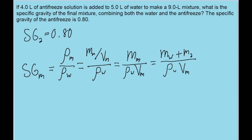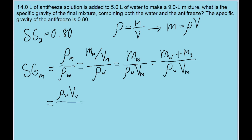We don't have the masses of either of these things, so we'll want to expand a little further. The mass of the water — since density equals mass over volume, we can rewrite this so that mass equals density times volume. So the mass of the water is the density of the water times the volume of the water, plus the mass of the antifreeze, which is density times volume. The density of the antifreeze is just the specific gravity of the antifreeze times the density of water — that's how specific gravity works — multiplied by the volume of the antifreeze. All this is divided by the density of the water times the volume of the mixture.